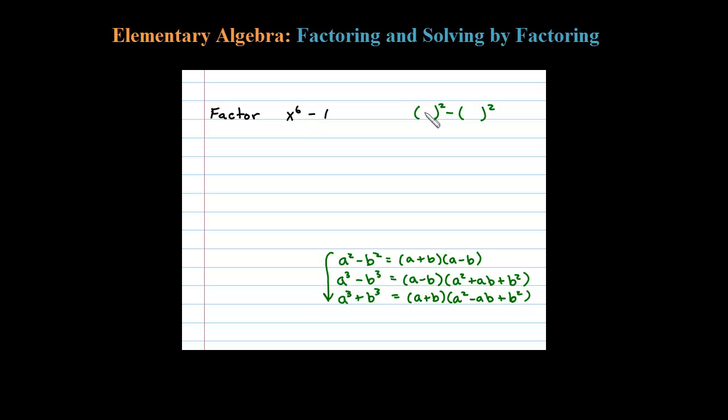I'm looking at x to the sixth. What squared is x to the sixth? Well, after a little bit of thought, hopefully you could see x to the third. X to the third squared is x to the sixth because 3 times 2 is 6.